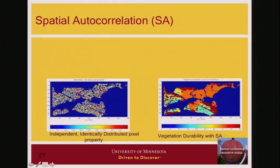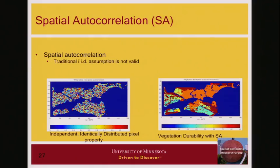In real maps you notice a lot of large, smooth areas — nearby things are similar — and one can quantify that as autocorrelation. Whenever you see these long smooth areas in maps, it intuitively has spatial smoothness or autocorrelation. It is violating the IID assumption because the nearby pixels are similar; they are not independent.